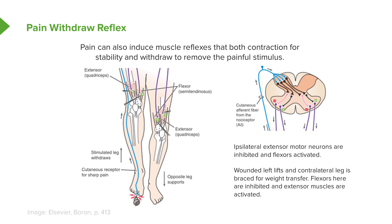Meaning that you have a reduction in the amount of alpha motor neurons going to the quadriceps and an increase of ones going to the hamstring, which is your semimembranosus and semitendinosus.